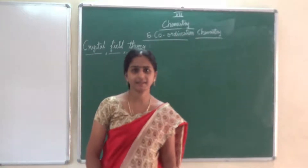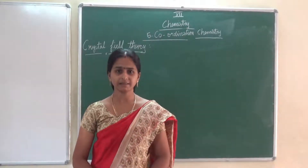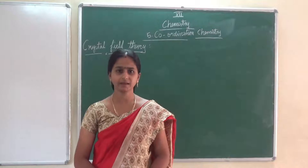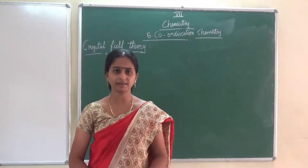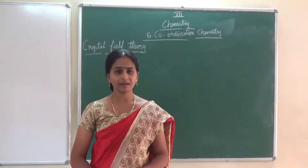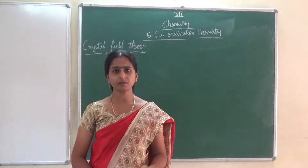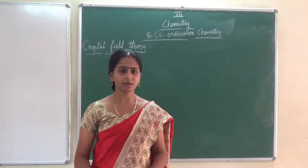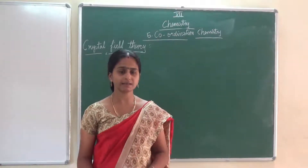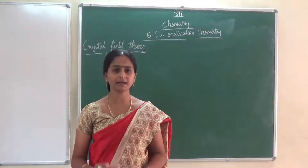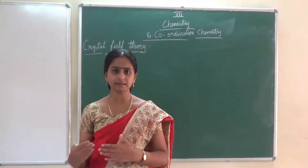Good morning children. In last class we discussed about valence bond theory, its application, and its limitations. Valence bond theory explains the bond between the central metal atom and the ligand clearly, but it has some limitations. To overcome those limitations, we are now going to see another theory — that is crystal field theory. This theory explains the color of the complex and the magnetic behavior of the coordination complex.